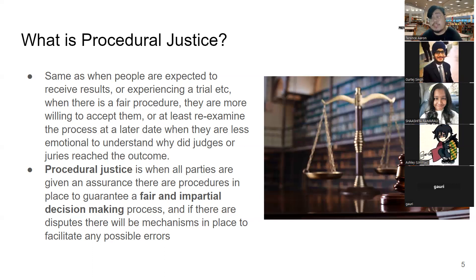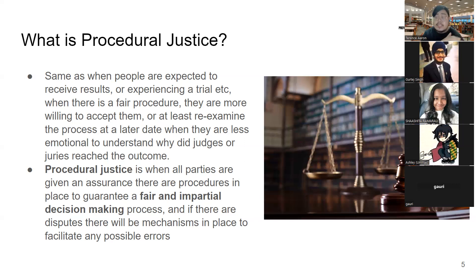It helps us figure out where we can appeal if there is a procedural failure, and helps us understand the logic behind things. At the end of the day, procedural justice is when all parties involved are given assurance by the state that there are certain procedures in place — a guarantee of a fair and impartial decision-making process.